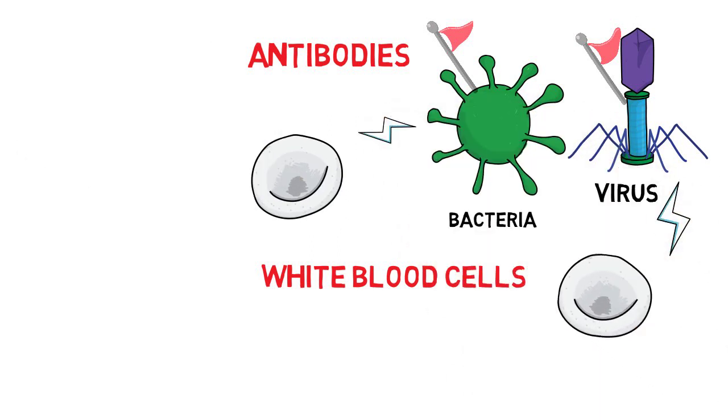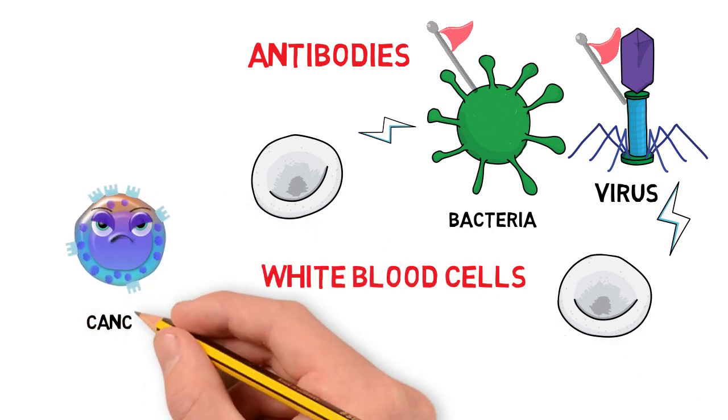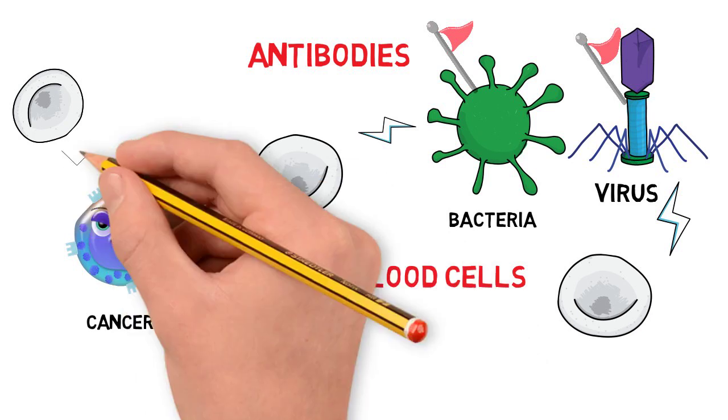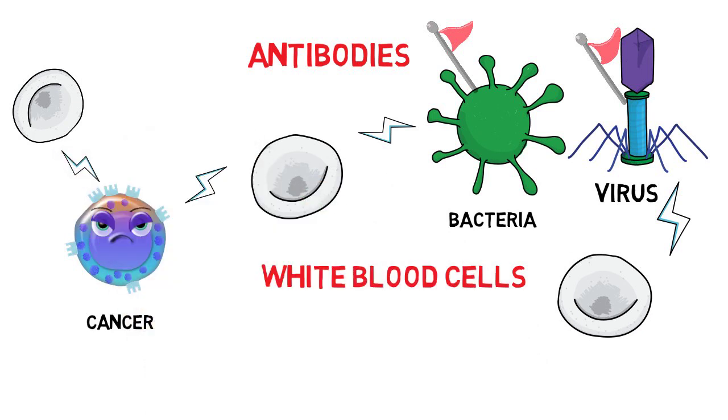In addition to eating up outside invaders, your immune system will also check if any of your own body cells are becoming abnormal, for example cancer cells. The immune system will eat up abnormal and dead cells too.